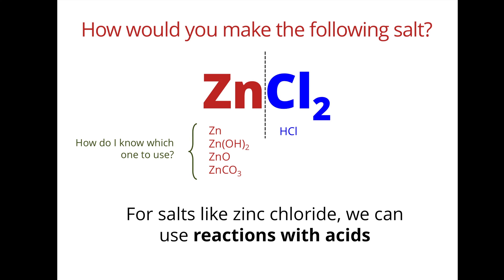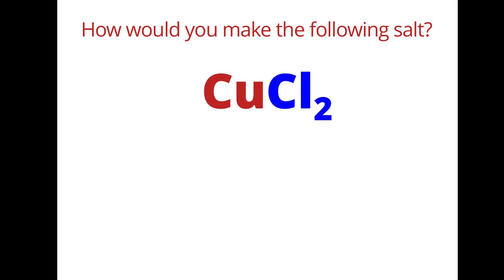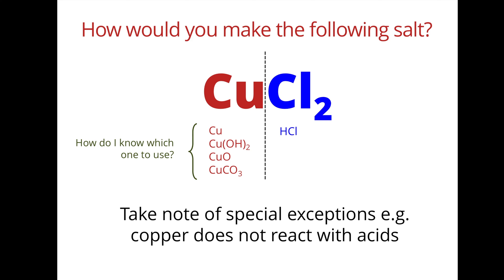Another example: copper chloride. Applying the same principle, the chloride tells us we need hydrochloric acid, and the copper ion can come from the metal, the base, or the carbonate. However, this is a special case because copper is rather unreactive, so the metal itself will not react with an acid. We can use copper(II) hydroxide, copper(II) oxide, or copper(II) carbonate, but not copper metal. The reactivity of the metal is important.